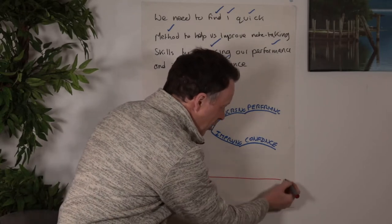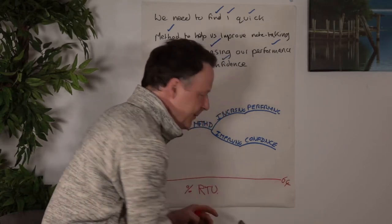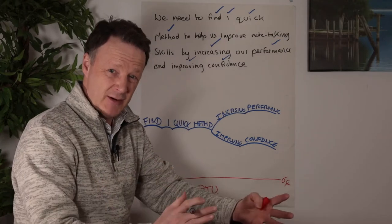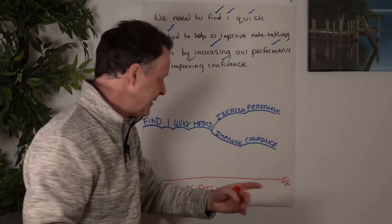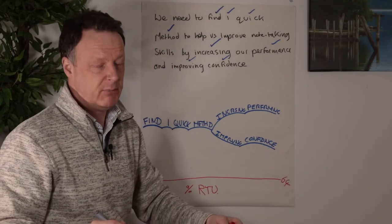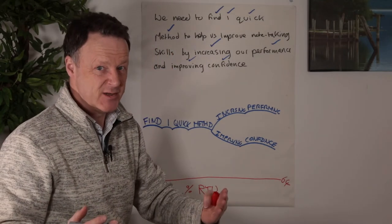So cognitive neuroscientists have tested people in demanding meetings and presentations who are using previous generation note-taking, so this sort of thing. And their real-time understanding, 64%, which is okay, but it's not great.